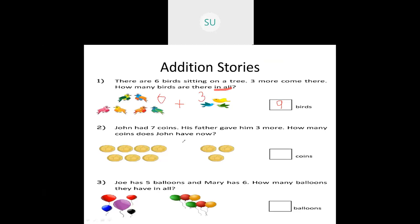John had 7 coins. His father gave him 3 more. So how many coins does John have now? First John had 7 coins, then his father gave him 3 coins. So 7 plus 3 will be 10. So John now has 10 coins.